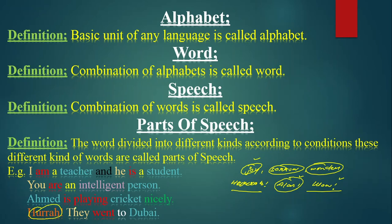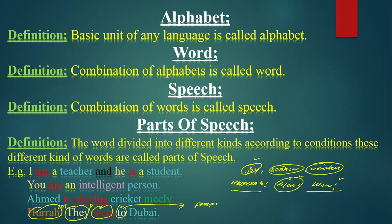'They' is a pronoun, 'went' is a verb, 'to' is a preposition. Preposition is a word which comes before a noun or pronoun to complete its meaning — they tell direction, condition, or time. We will discuss them in different categories. 'Dubai' is the name of a place — that is a noun. So this is all about Parts of Speech — each word has its own function.